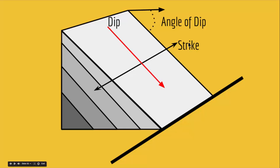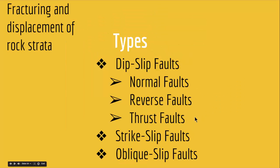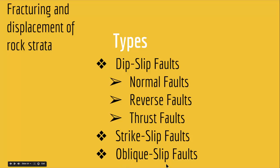So keeping this in mind: dip slip faults are those faults in which movement is primarily parallel to the dip of the fault surface; strike slip faults are those faults that move in a horizontal direction; and we have oblique slip faults. Now let's look at each in more detail. Dip slip faults have three kinds: normal faults, reverse faults, and thrust faults.